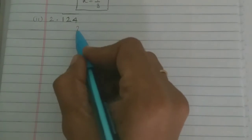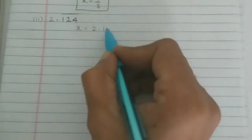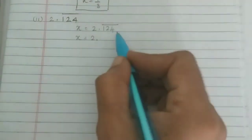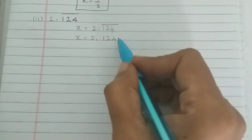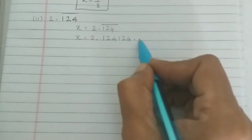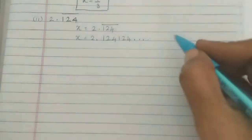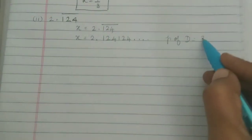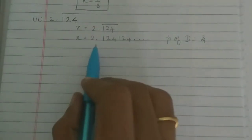Now for example 2.124 bar. Then what do we do? x is equal to 2 point... we will expand. Now 1 to 4 is repeated — so 1 to 4, 1 to 4. The period of decimal: 1, 2, 4 is repeated by 3. Then 3 is the period, so we multiply by 1000 on both sides.